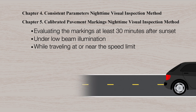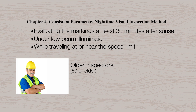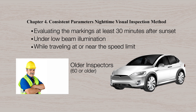There are unique aspects to each of the visual methods. The consistent parameters method relies on the judgment of a trained inspector who is at least 60 years old to evaluate the markings. The inspector determines how well the markings meet his or her nighttime driving needs. This method ties to the minimum retroreflectivity levels because the research to establish these levels is based on the visibility needs of older drivers. A sedan is a preferred inspection vehicle because it most closely matches the research parameters.